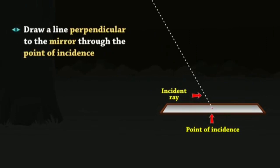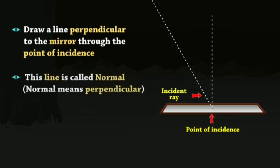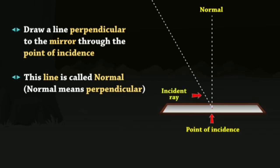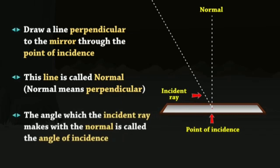Draw a line perpendicular to the mirror through the point of incidence — this is called the normal. The angle between the incident ray and the normal is called the angle of incidence.